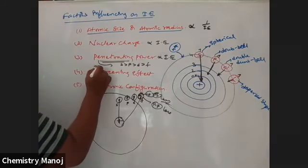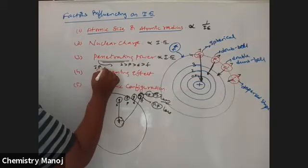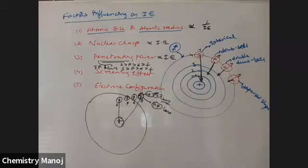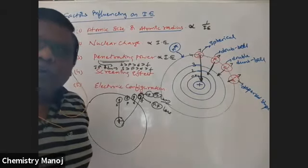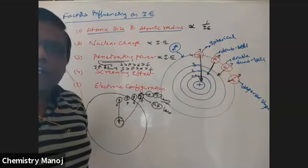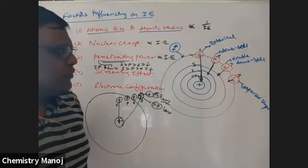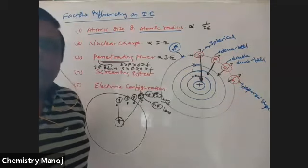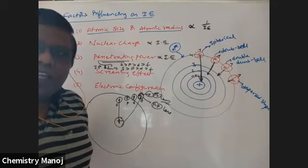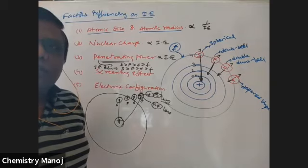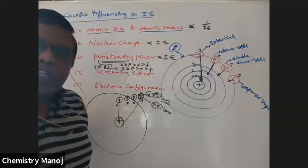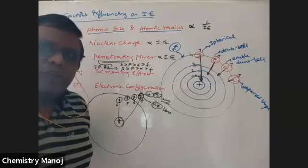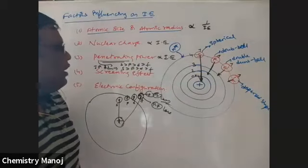Therefore the ionization potential order is s > p > d > f. The tendency of an electron to move towards the nucleus — penetration — is very high for s orbital and least for f orbital. More penetration means more attraction with nucleus, making the electron more difficult to remove, so more ionization energy. Penetrating power and ionization energy are directly proportional.